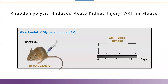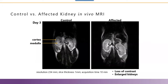Model of acute renal injury. The model uses acute renal injury secondary to acute rhabdomyolysis, induced by intramuscular injection of 50% glycerol in mice. In vivo MRI scanning was done on days 0, 3, and 8, and just before terminal sacrifice on day 15. Subgroups were sacrificed after 3 and 15 days for ex vivo MR scanning and histopathology evaluation. In vivo MR on day 3 indicated that the kidneys of treated mice showed diffuse pallor associated with loss of regional distinction compared to control animals.